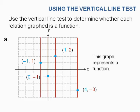So it says in this first example, use the vertical line test to determine whether each relation graph is a function. And notice they gave you some ordered pairs here, negative 1, 1, which is in the second quadrant, 0, negative 1, 1, 2, and 4, negative 3. Notice all of these points from the last instructional video, all of the x values are what? They're different.